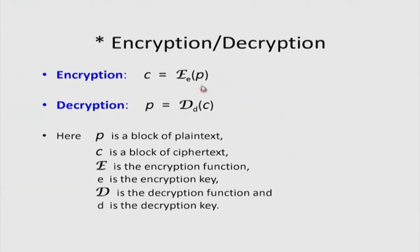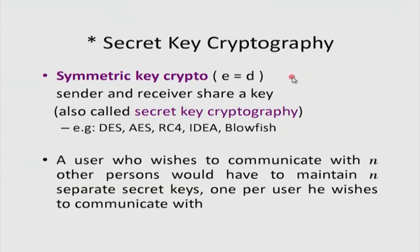This is the notation: p is the plaintext, c is the ciphertext, E is the encryption function and e is the encryption key; D is the decryption function and d is the decryption key. There are two types of cryptography. One is symmetric key cryptography, so called because e is the same value as d — both sender and receiver must know this value to encrypt and decrypt. Also called secret key cryptography, well-known algorithms include DES, AES, RC4, IDEA, and Blowfish. A user wishing to communicate with n other persons must maintain n separate secret keys, one per user.